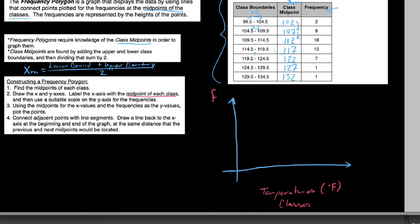We're skipping from zero up to 102, so we put a squiggle from zero to 102, then mark 102, 107, 112, 117, 122, 127, and 132 as our last midpoint on the x-axis. For the y-axis, our highest frequency is 18, so we choose a scale going by fives: 5, 10, 15, 20.